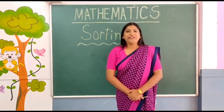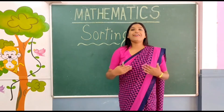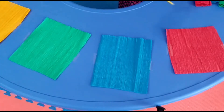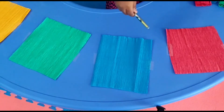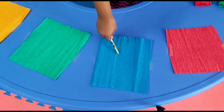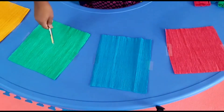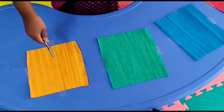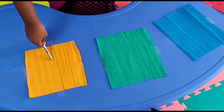Today, we will learn about Colors. Now, I am going to show you some of the Colors. Are you ready? This is Red Color. This is Blue Color. This is Green Color. This is Orange Color. Okay, children?